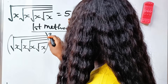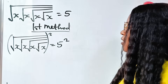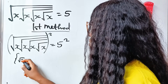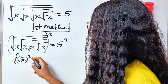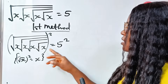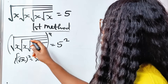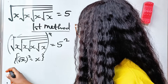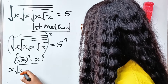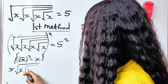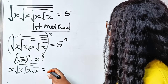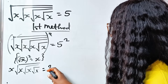Now, if we square both sides, remember that square root of x squared is equal to x. So that means this will give us x, then square root of x, then square root of square root of x, and then square root of square root of x remaining, equal to 5 squared, which is 25.